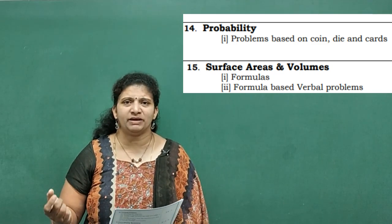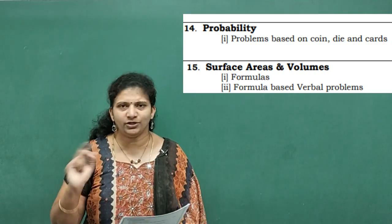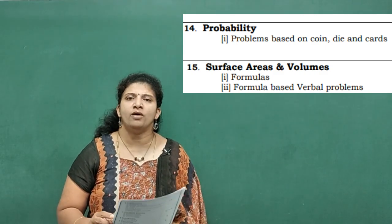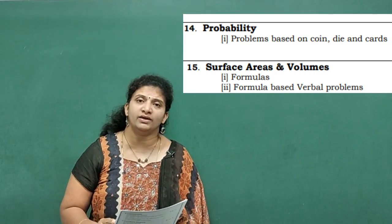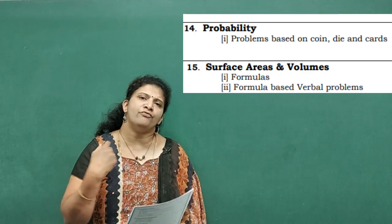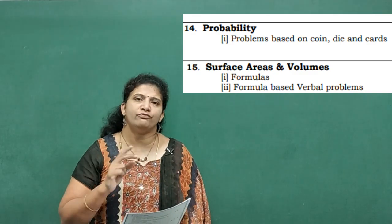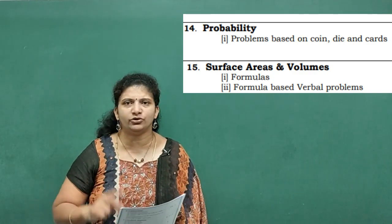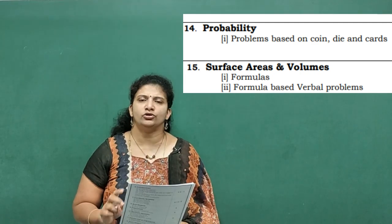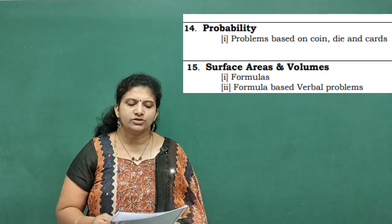Fourteenth chapter — Probability. We can guess probability of an event, not of an event, or probability involving a coin, dice — two coins, three coins, one die — any one problem we can guess for two marks. Fifteenth chapter — Surface Areas and Volumes: formulas and verbal problems. One or two marks for formulas, and two marks for formula application questions, total about three to four marks.